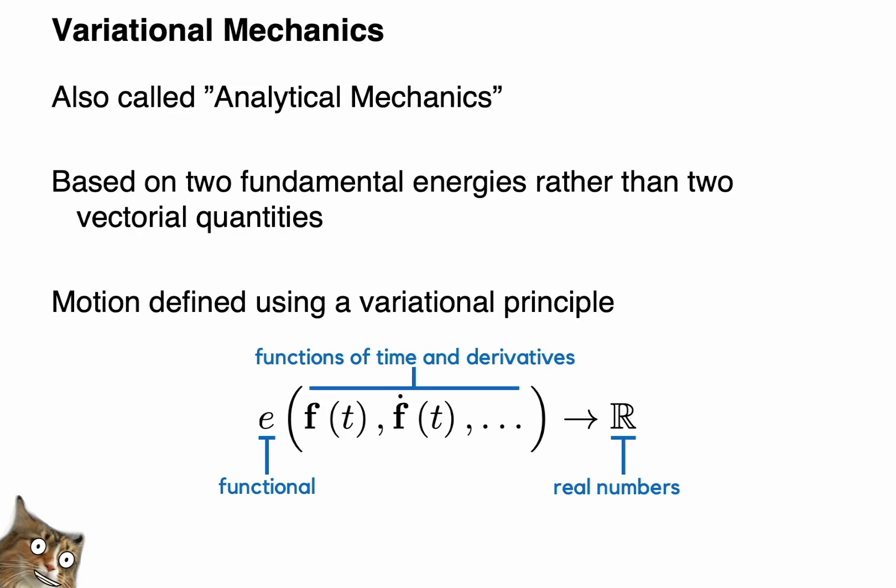So variational mechanics is going to allow us to synthesize equations of motion using these two types of energies via something called a variational principle. Variational principles rely on functionals like this. A functional is a map from a function and its derivatives to the real numbers. Here, the functional e takes in the function f and its derivatives with respect to time. Rather than cumbersomely write d by dt, I've switched to the common dot notation, wherein a dot over a function denotes the total time derivative.